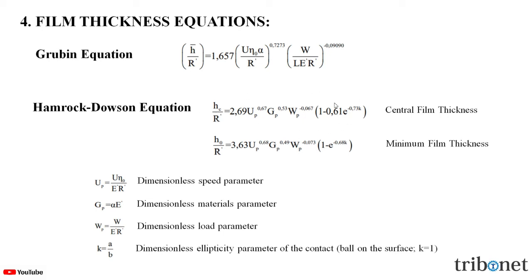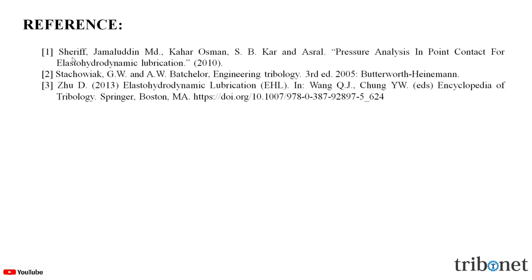The next equation is the Hamrock–Dowson equation. With this equation, we are able to calculate the central film thickness and also the minimum film thickness. These equations are based on different dimensionless parameters — that is, speed, materials, load, and also the type of contacts, whether it is a point or a line contact. The Hamrock–Dowson equation is also used in the calculation of film thickness.